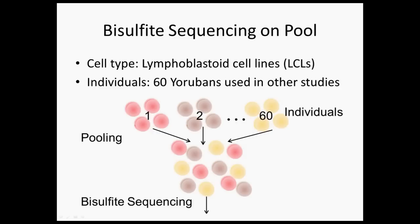To tell you a little bit more about the cells we chose: we used a cell type called lymphoblastoid cell lines, abbreviated LCLs, which is one of the most commonly studied cell lines in humans. Because of this, we are able to later integrate other information we know about LCLs with our results. We did the study on 60 Yorubans from Nigeria that have been used in many other studies, so we can integrate other information learned about these individuals with our results.